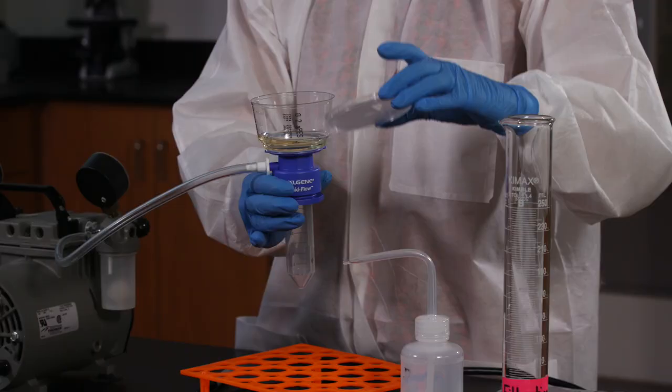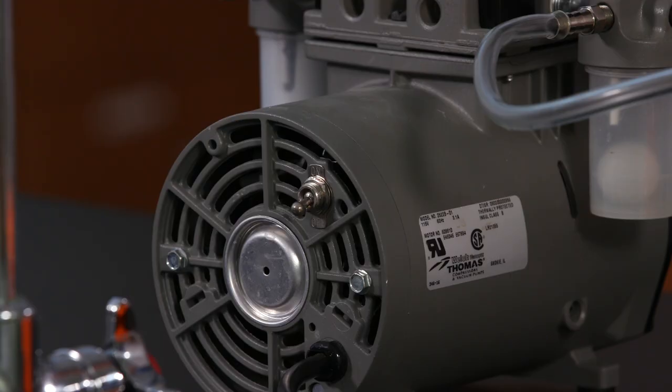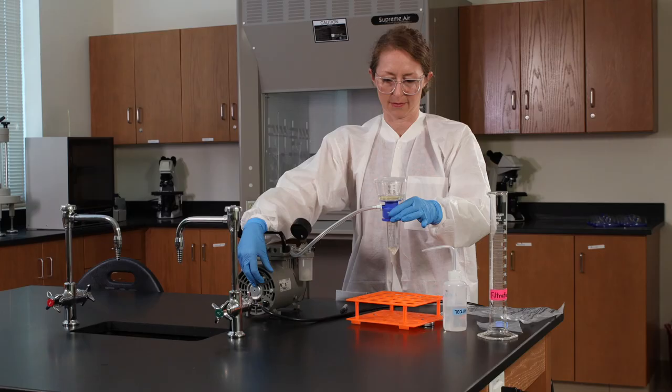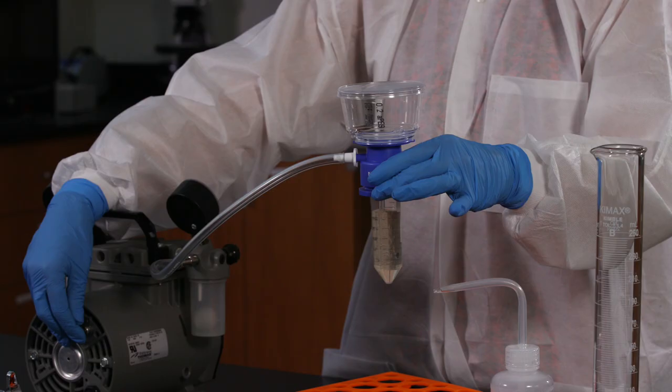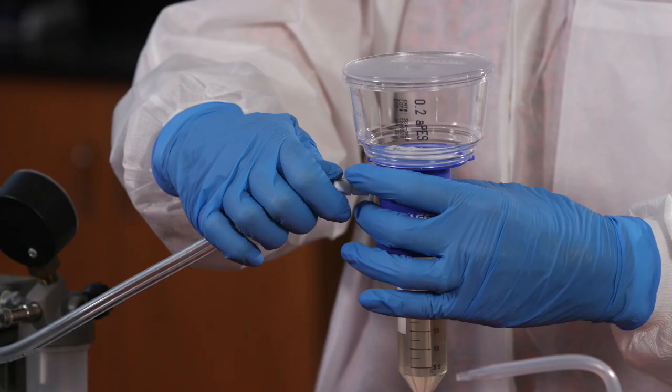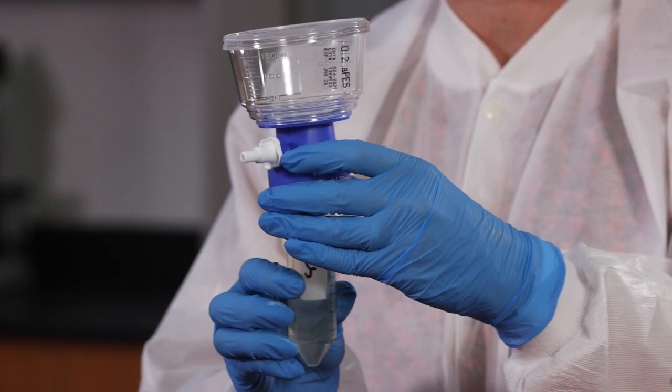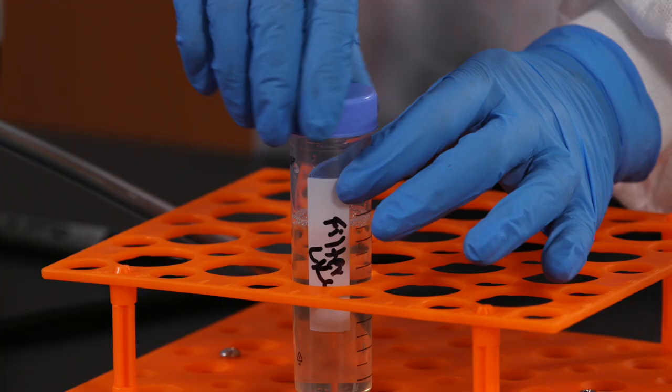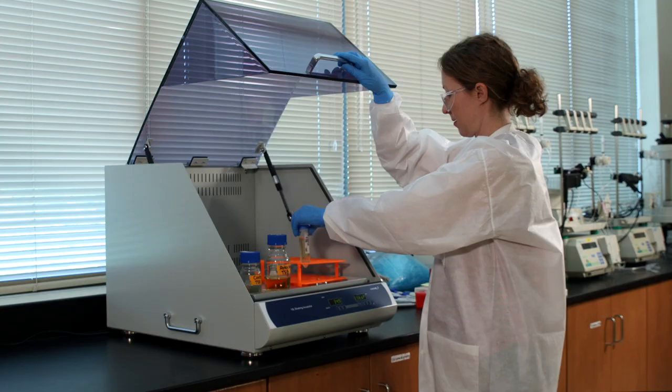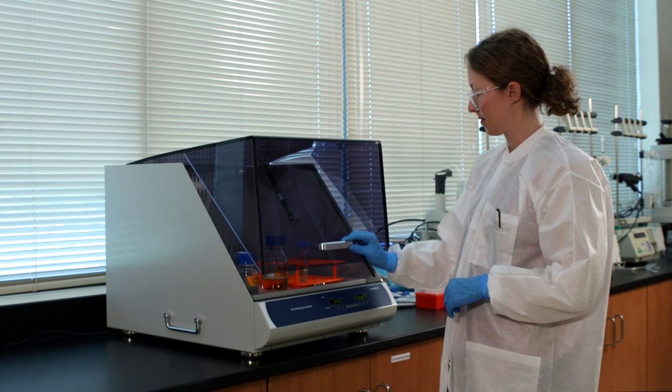Remove the lid, pour the broth into the chamber, then replace the lid. Turn on the pump to start the filtration. Once all the liquid has been filtered, turn off the pump and detach the vacuum line. Label the filtered solution and place it in the incubator with the other two samples.